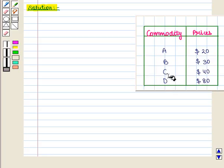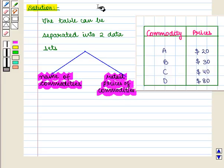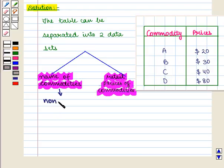The table can be separated into two data sets. One data set contains the name of commodities, and the other data set contains the retail prices of the commodities. Now here we see that the names are non-numerical entries.